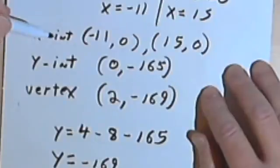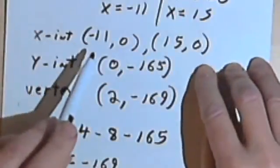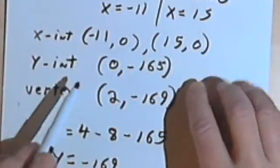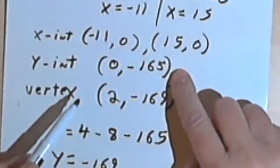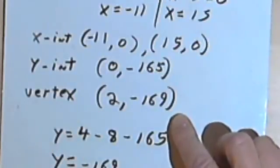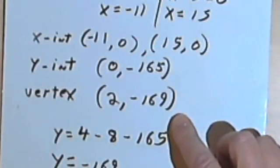Okay, so now I know that my graph has these two x-intercepts at negative 11 and 15. It has a y-intercept at negative 165. And it has a vertex at 2, negative 169. And I want to set my viewing window.